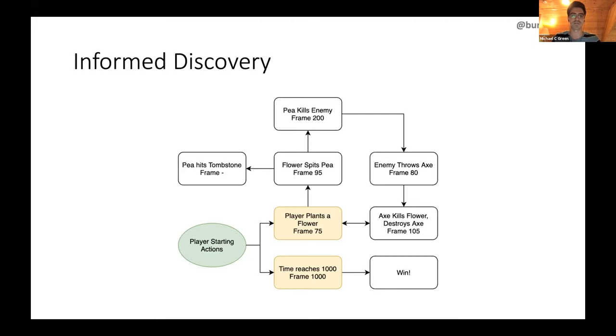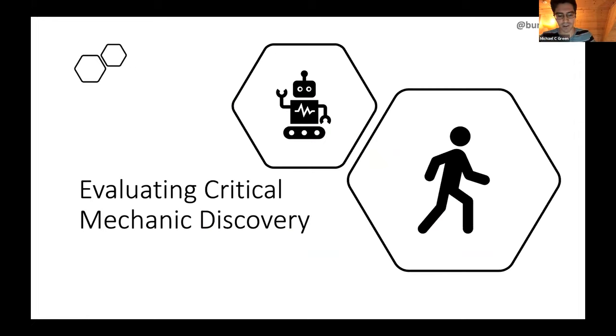In our paper, we used a best-first search, a greedy best-first search algorithm. It's looking for the lowest cost frame in its horizon. It's a slightly modified version because it also can't pick a node which has a lower frame value than the node it just picked. So if we start off with player starting actions, we have a choice between frame 75 and frame 1000, so it picks 75, and continues through the lowest cost path.